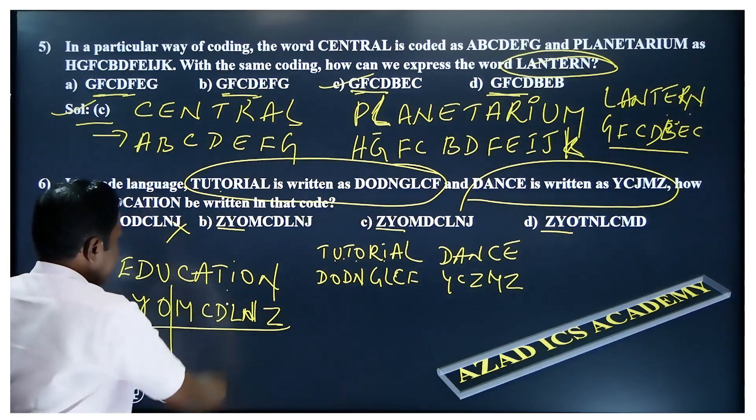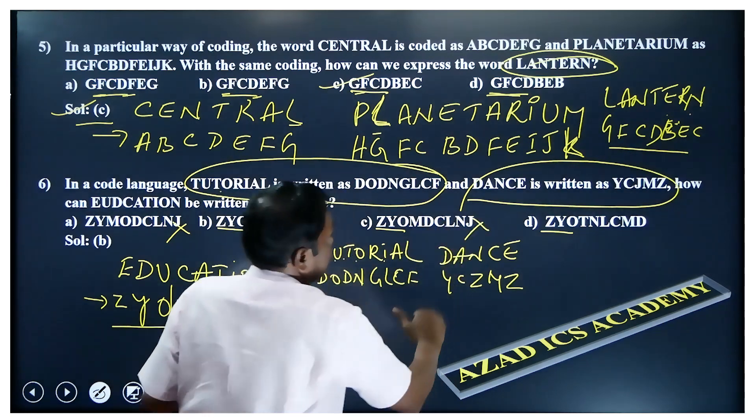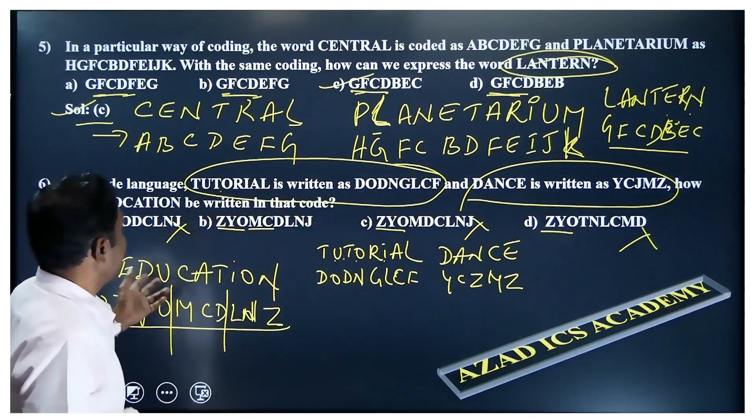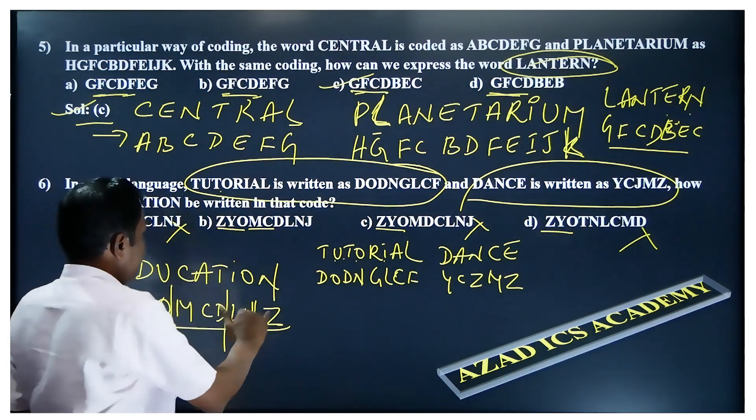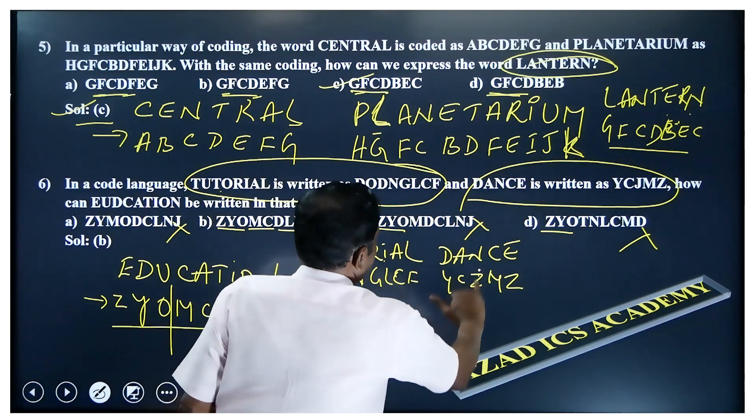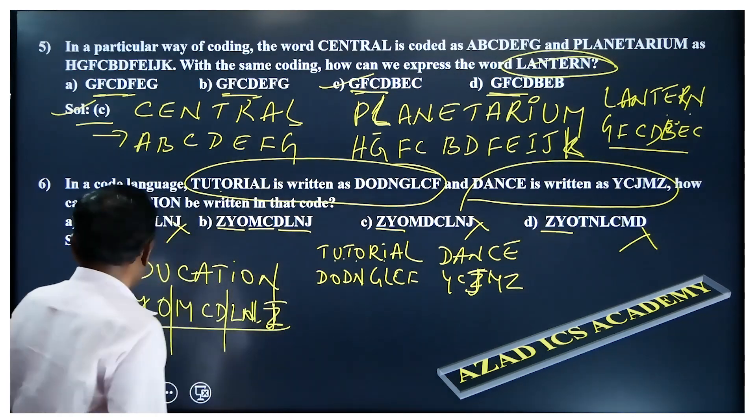Right. All three you can see here: Z-Y-O. Okay. Next M-C-D. This is out, and this is also out. M-C-D, none of this option is there. D-L-N-J. Yes. Right. That is the thing.